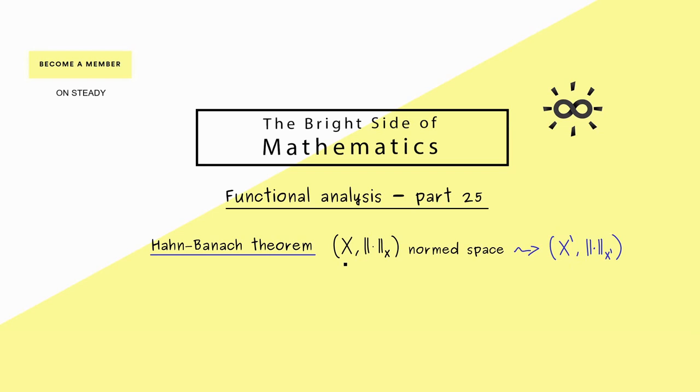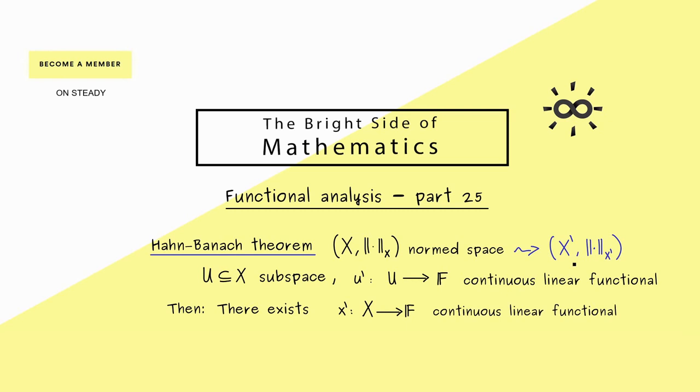Now the theorem is easy to remember. We just look at a subspace U in X and at a continuous linear functional only defined on U. In other words this U prime is an element in the dual space of the normed space U. With these assumptions the Hahn-Banach theorem tells us that there is an extension of this functional to the whole space X. Let's call this element lowercase x prime and it is defined on the whole space X and also mapped to the real or complex numbers.